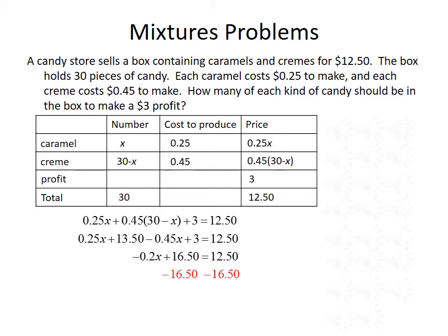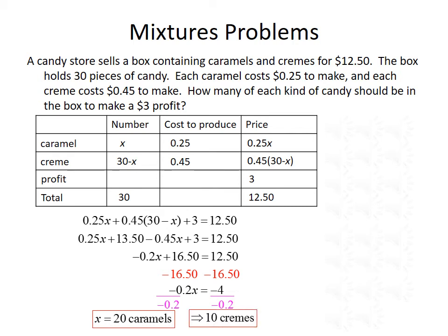Subtract 16.50 from both sides of the equation, giving us negative 0.2X equals negative 4. Then divide both sides by negative 0.2, and we get X equals 20. So since X was the number of caramels, we have 20 caramels. To find the number of creams, we'll use 30 minus X, so 30 minus 20 gives us 10 creams.